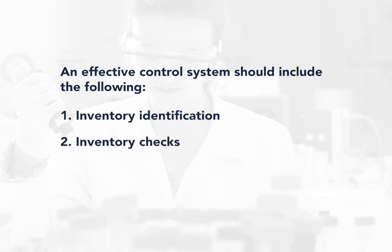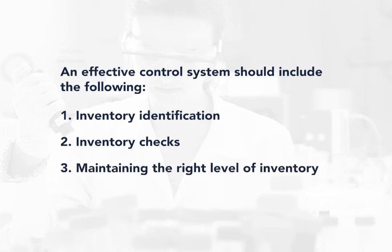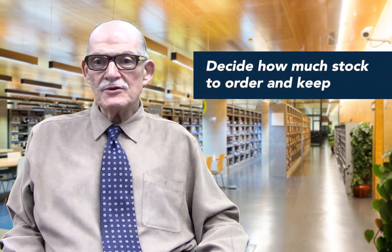Also, periodic inventory checks should be done. Pick an interval of time to regularly check your inventory, and you need a process for ensuring that you maintain the right level of inventory. Analyze usage data — if test systems or procedures have been in use for a period of time, use historical data to predict approximately what the future use will be. Also, decide how much stock you need to order and keep, as this depends on your level of usage, the type and variety of supplies, and how much space you actually have available.